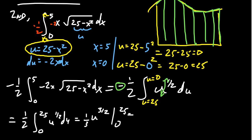Plugging in 0 will give you 0. Plugging in 25 will give you 125. So you get 1 third, 25 to the 3 halves, minus 0 to the 3 halves. You end up again with the exact same number, 125 over 3.